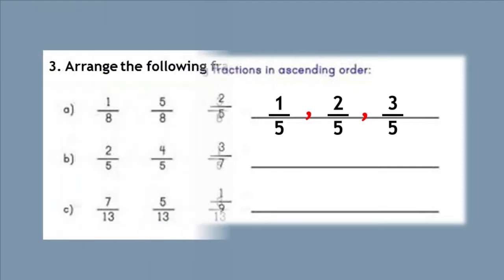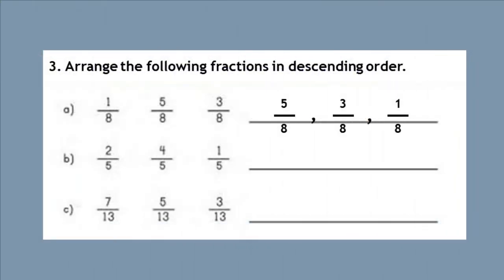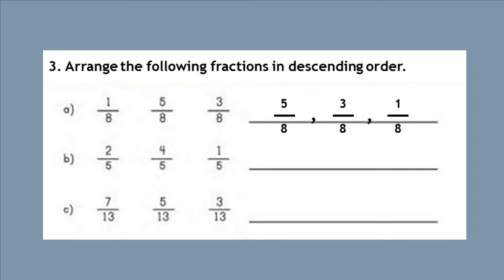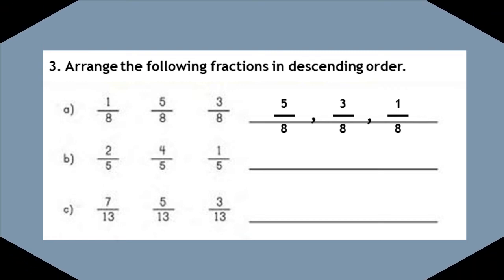Question number three: arrange the following fractions in descending order. Part A mein hamare paas hai 1/8, 5/8, aur 3/8. Sabse bada numerator 5 hai, isliye 5/8 pehle likhenge. Phir 3/8, aur sabse choti fraction 1/8 aakhir mein. Pyare bacchon, B aur C aapne khud solve karne hain. Agले lecture tak ke liye ijaazat chahunga — phir milenge, Allah Hafiz.